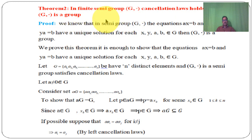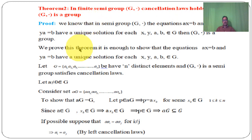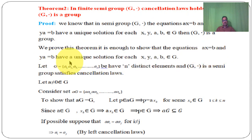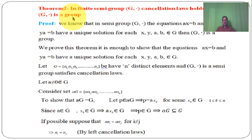To prove G dot is a group using the above theorem, it is enough to show that the equations AX equal to B and YA equal to B have a unique solution. G dot is a semigroup, so closure and associative properties hold. With cancellation law satisfied, we prove that these equations have a unique solution. Therefore G dot is a group by the previous theorem.